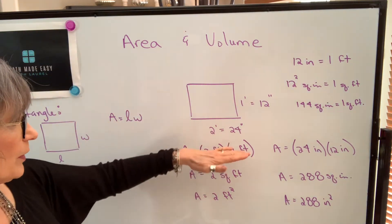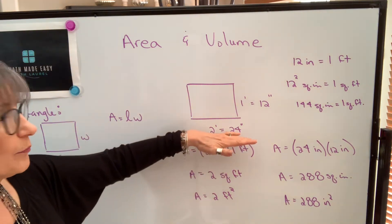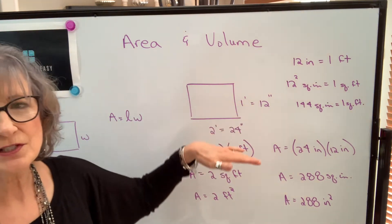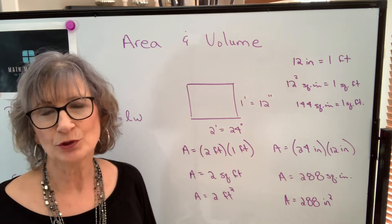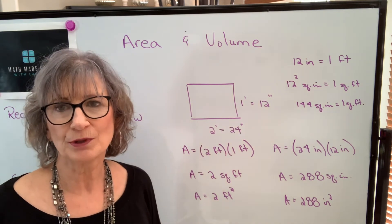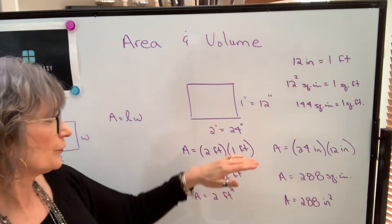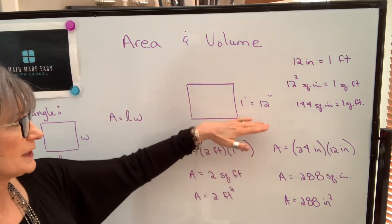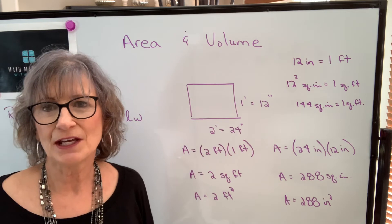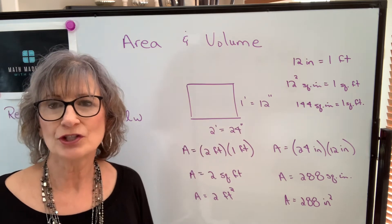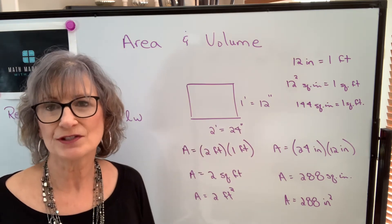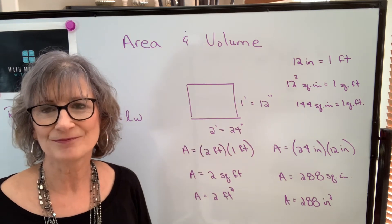The other thing I want to mention is that both dimensions have to be in the same unit before you can multiply them. So if one dimension was in inches and the other was in feet, you would not be able to find the area until you change both dimensions to the same unit.